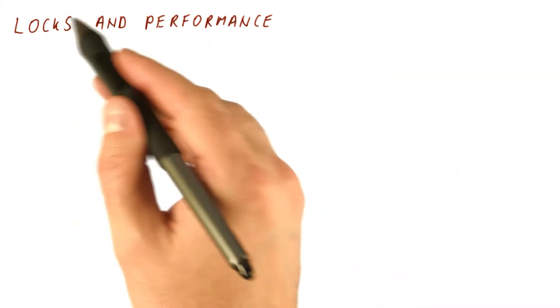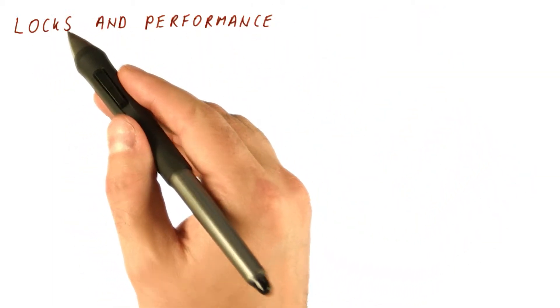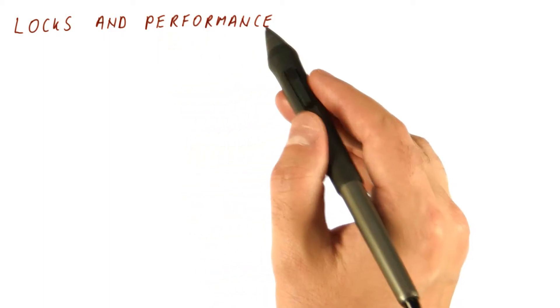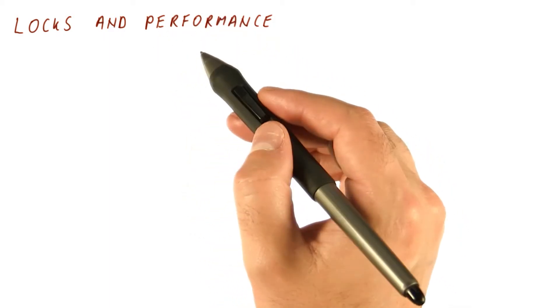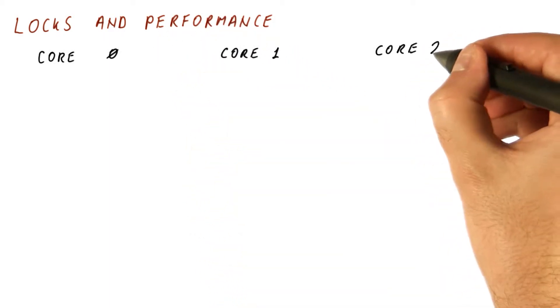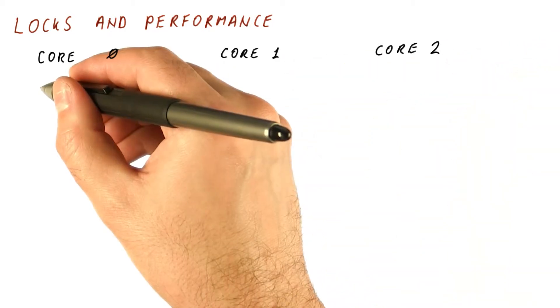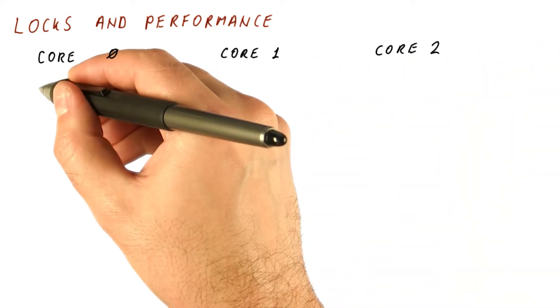So now let's consider how different lock implementations interact with the coherence protocol and what performance they achieve. Let's look at three cores: zero, one, and two. Let's first try to do this with atomic exchange instructions.